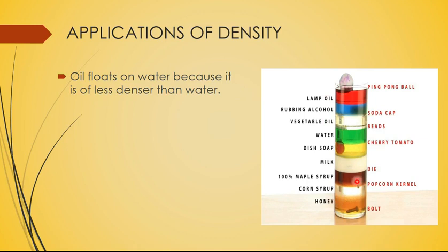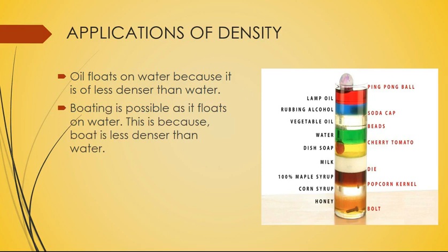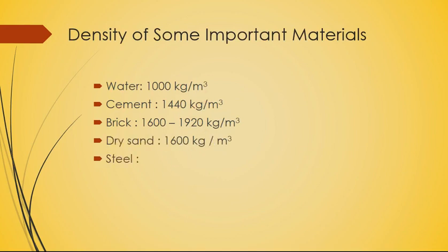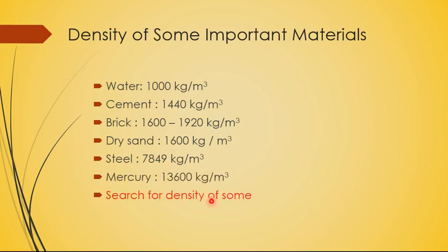In a fluid tower, fluids are arranged in descending order of density. At the bottom is honey, which is the densest, followed by corn syrup which is less dense than honey. Boating is possible because a boat is less dense than water. Important density values include: water at 1000 kg/m³, cement at 1440 kg/m³, dry sand, steel, brick, and mercury. Students are asked to find densities of additional materials.